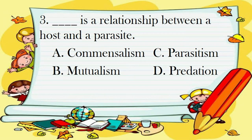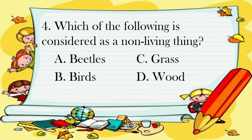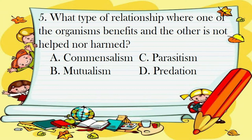Number 3. Blank is the relationship between a host and a parasite. A. Commensalism. B. Mutualism. C. Parasitism. D. Predation. Number 4. Which of the following is considered as a non-living thing? A. Beetles. B. Birds. C. Grass. D. Wood. Number 5. What type of relationship is it where one organism benefits and the other is neither helped nor harmed? A. Commensalism. B. Mutualism. C. Parasitism. D. Predation.